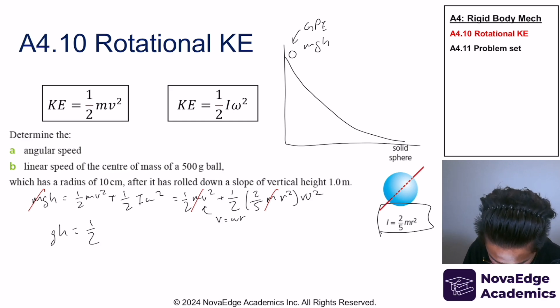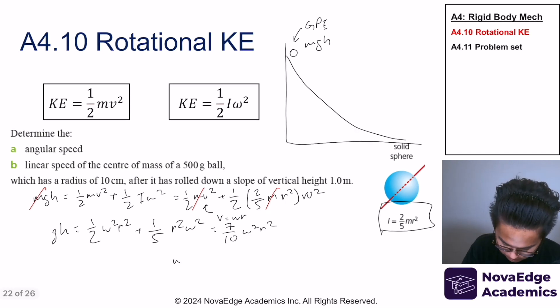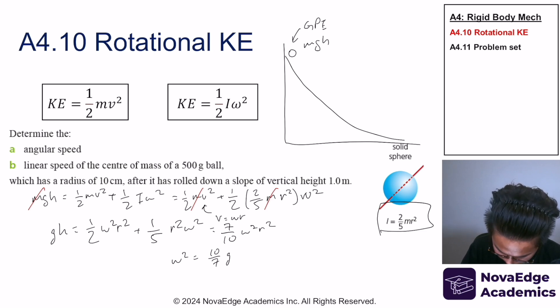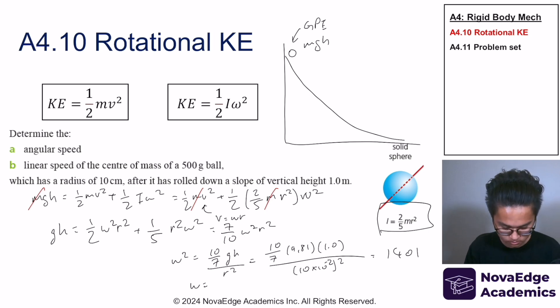And I can also replace velocity with angular velocity. So, I'm going to get simplified like that. Now, if I were to combine these two, I get that. And now, I can just solve for W. So, I get that the angular velocity is 37.4 radians per second. Now, it's easier to find B.